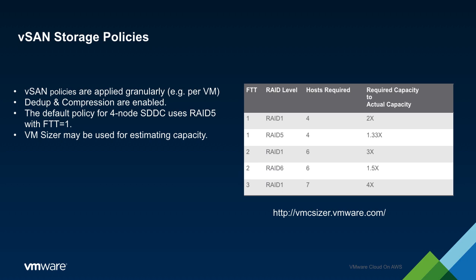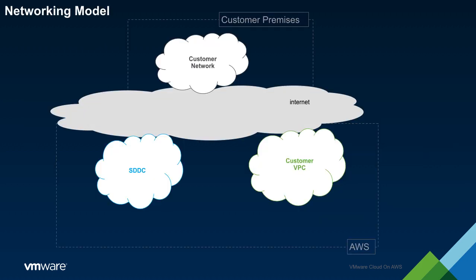Finally, the VMC Sizer tool has been made available as a means of assisting customers with estimating the number of hosts required to meet their storage demands. Next, we'll review the networking model of an SDDC. The diagrams represent a typical network configuration, with an on-premises network on top and an AWS region below. Within AWS are the SDDC and the customer-owned VPC.